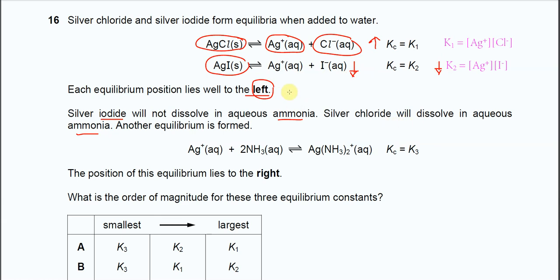The last equilibrium is not really a problem. When the silver chloride is dissolved in ammonia, the silver ion reacts with ammonia to form the complex ion.